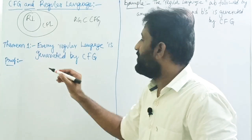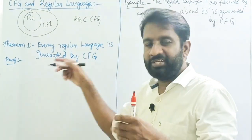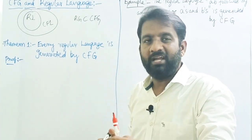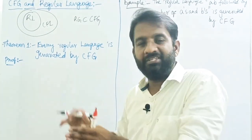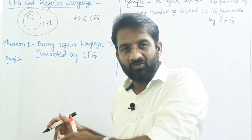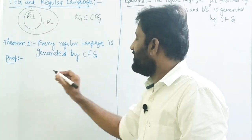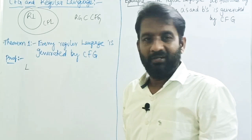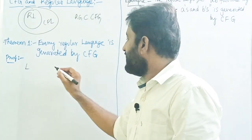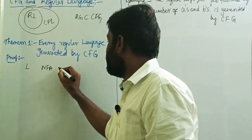Theorem one: every regular language is generated by a context-free grammar, meaning that for every regular language, there exists a context-free grammar according to the Chomsky hierarchy. To prove this, take the language L accepted by a finite automaton — let's say an NFA or DFA.